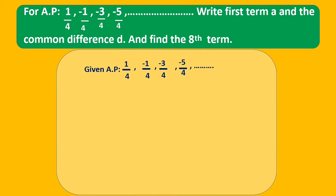Here the first term is 1/4. And the common difference - difference between two consecutive terms. So d equals -1/4 minus 1/4, equal to -2/4, that is -1/2.